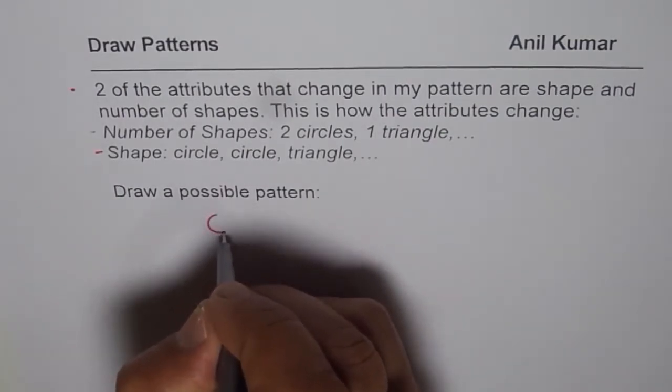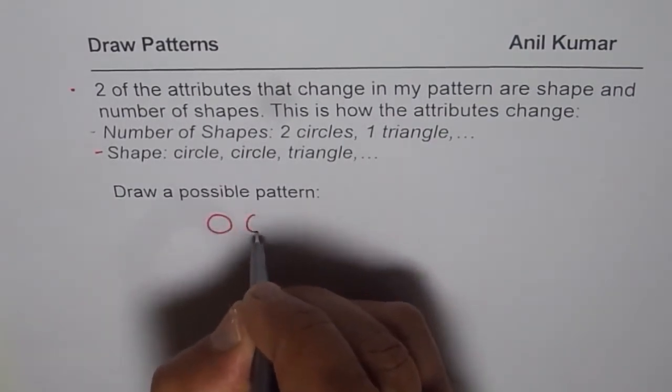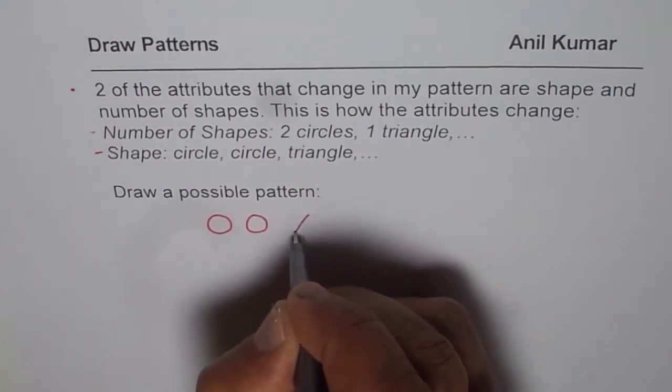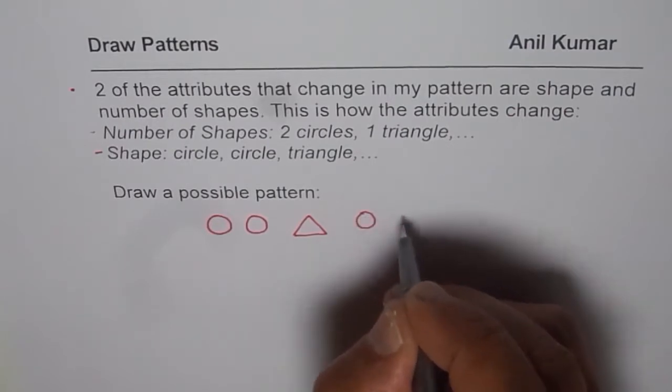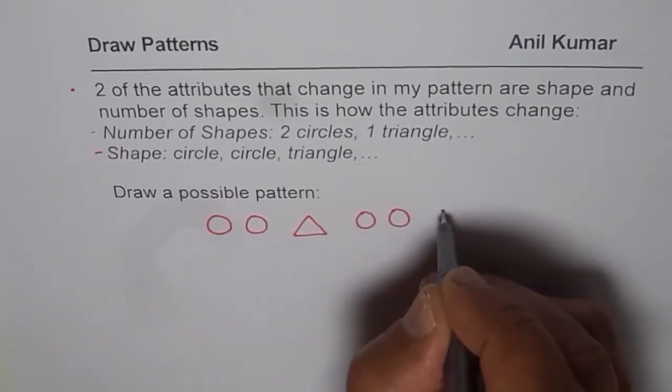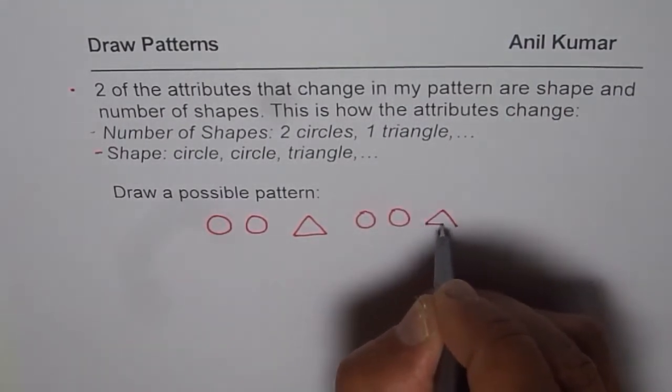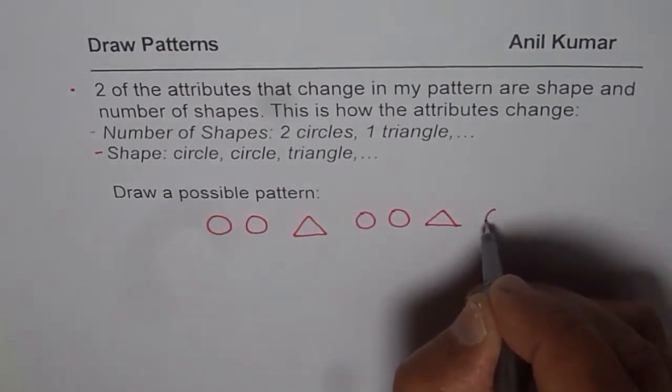So what we can do is we can draw two circles and then we can draw a triangle. And this is the pattern which repeats. Again, two circles and a triangle. So that is how you can draw your pattern.